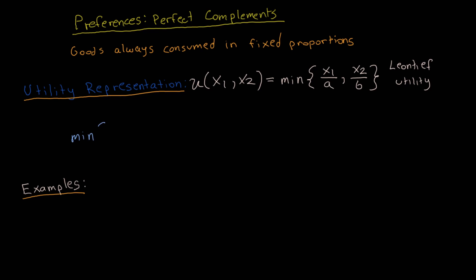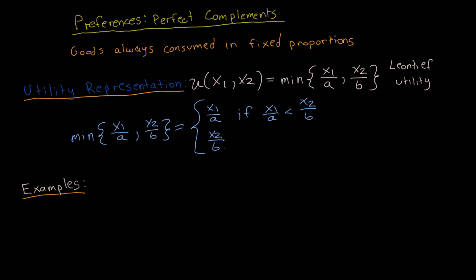The minimum operator between x1 over a and x2 over b is equal to x1 over a if x1 over a is less than x2 over b — the minimum operator just takes the minimum between those two values and spits out the smallest one. Or it could be equal to x2 over b if x1 over a is greater than x2 over b. These conditions both hold with equality as well, because if both terms are equal to each other, it doesn't matter which one we write down.